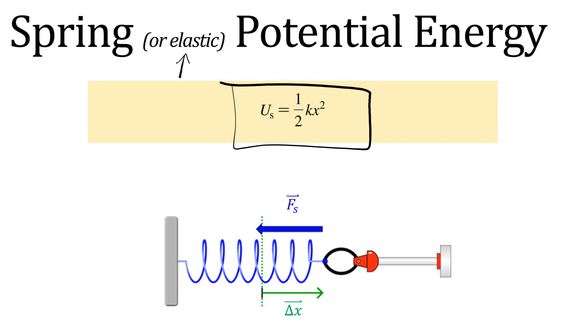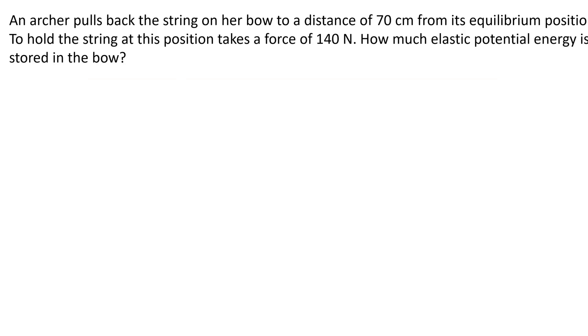All right, let's see how this looks at an example problem. Here, I have an archer pulling the string on their bow back a distance 70 centimeters from the equilibrium position. And then we hold the string at this position with a force of 140 newtons and the amount of elastic potential energy stored in the bow is what we're looking for. So let's think about this for a second. Here's you. You're really excited. You're holding a bow string and you are holding this, right? You got the arrow. Fantastic. Having a great day. Yay.